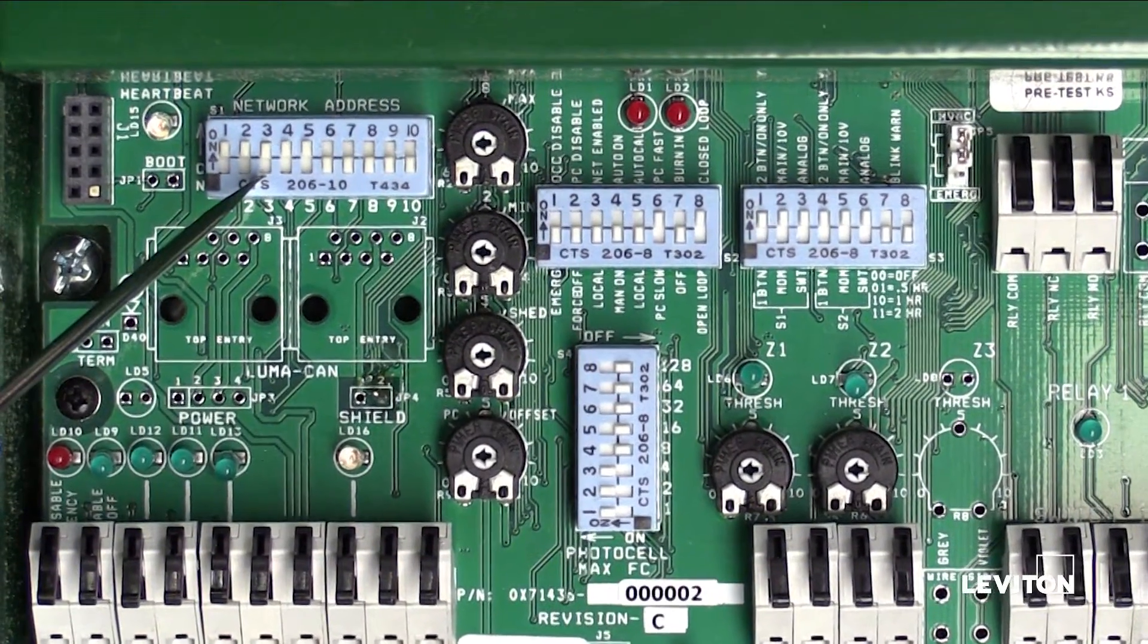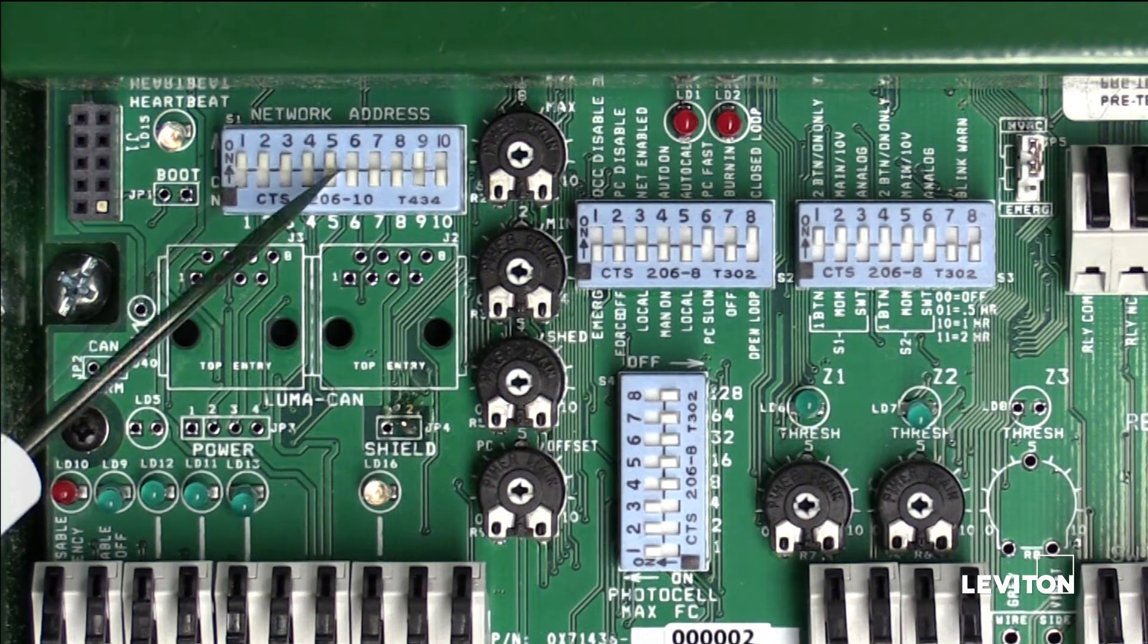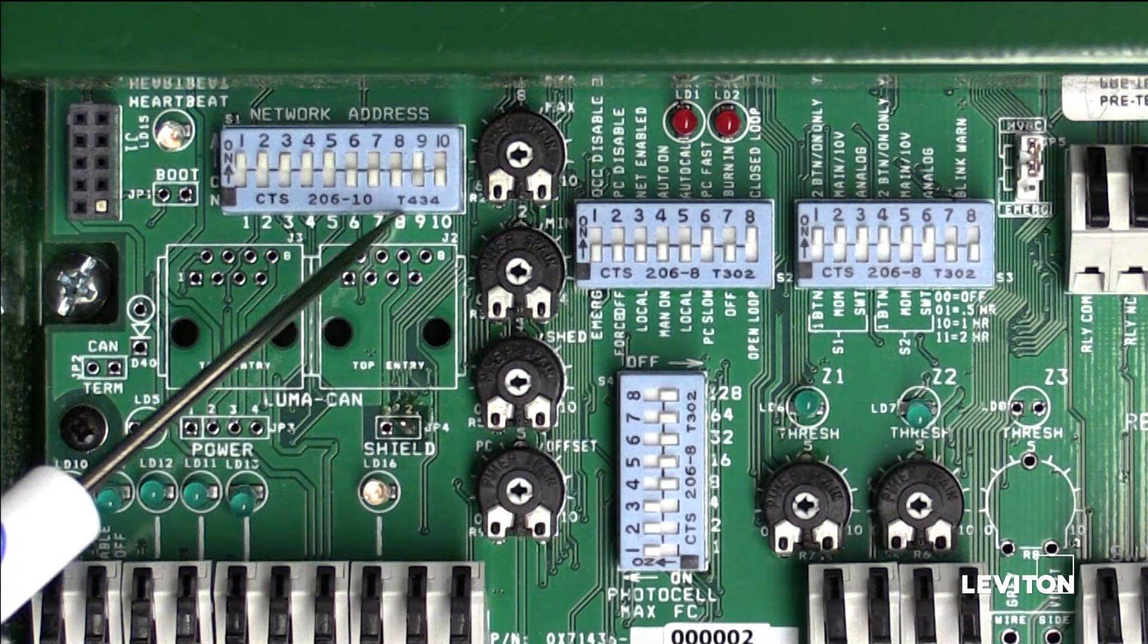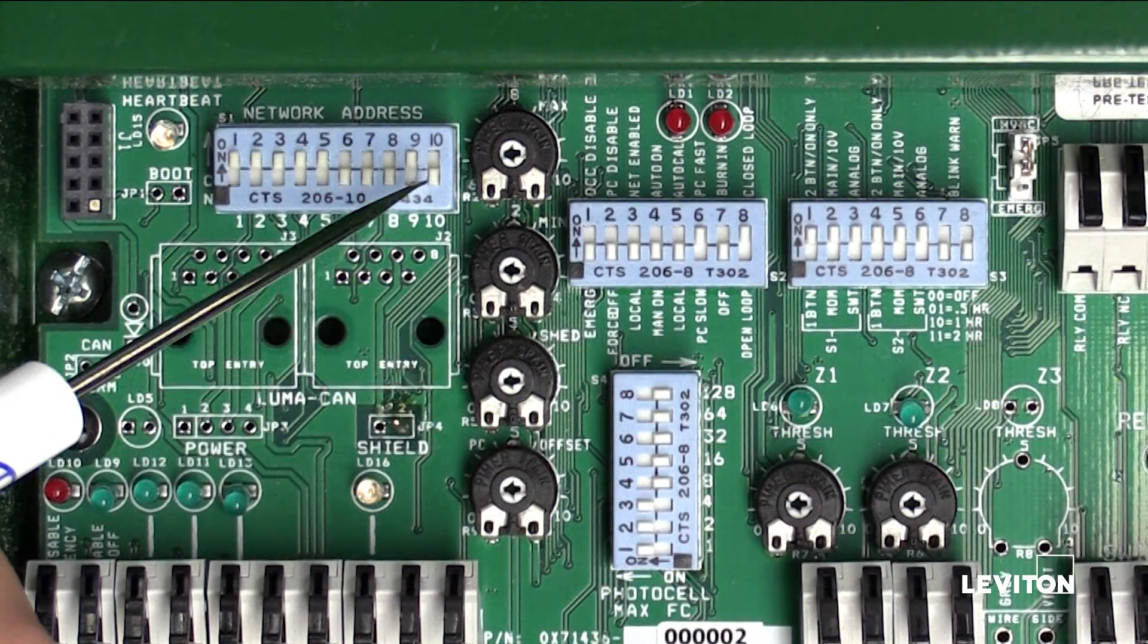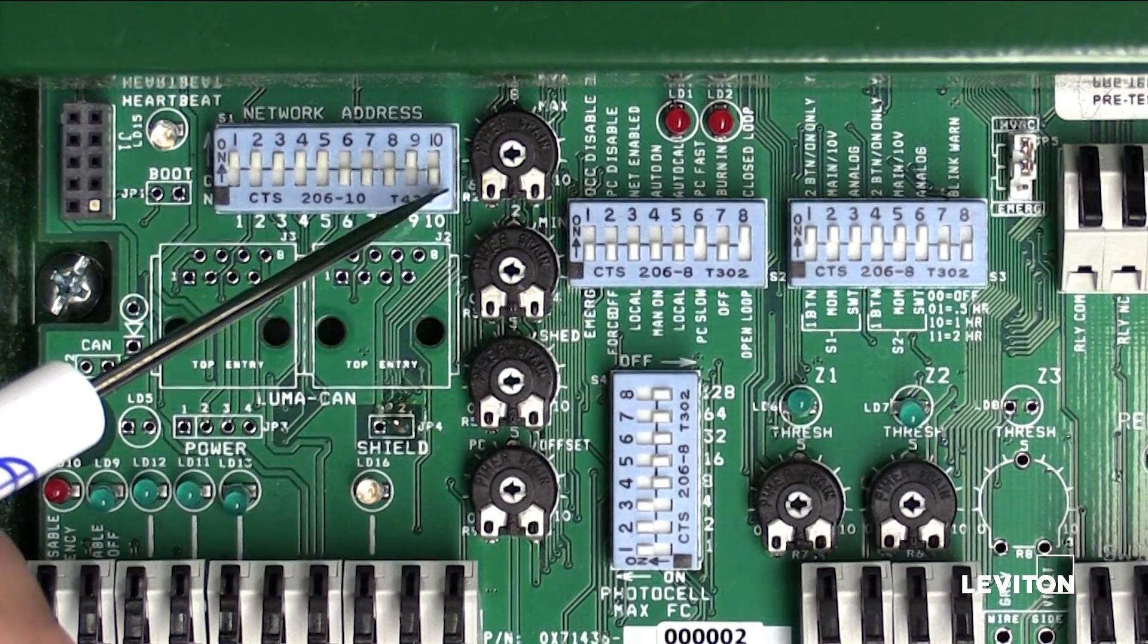Factory settings for the dip switches are as follows: Dipswitches 1-5 in the on position, Dipswitches 6-8 in the off position, Dipswitch 9 in the on position, Dipswitch 10 in the off position.